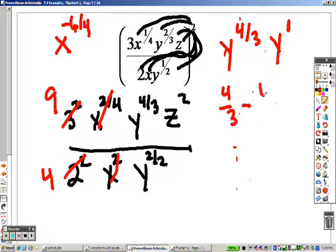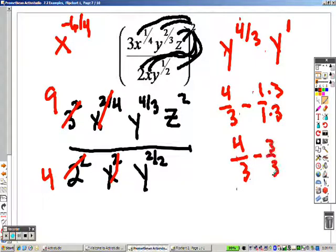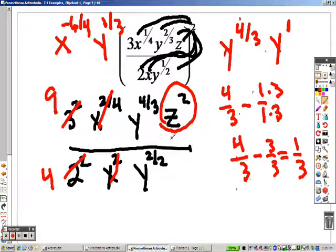4 thirds minus 1 is like saying 1 over 1, so to get the same base, I multiply them by 3, so it's 4 thirds minus 3 thirds, which is 1 third. And that means I have now with those two, I have a y to the 1 third, and there is no z, so it's just a z.